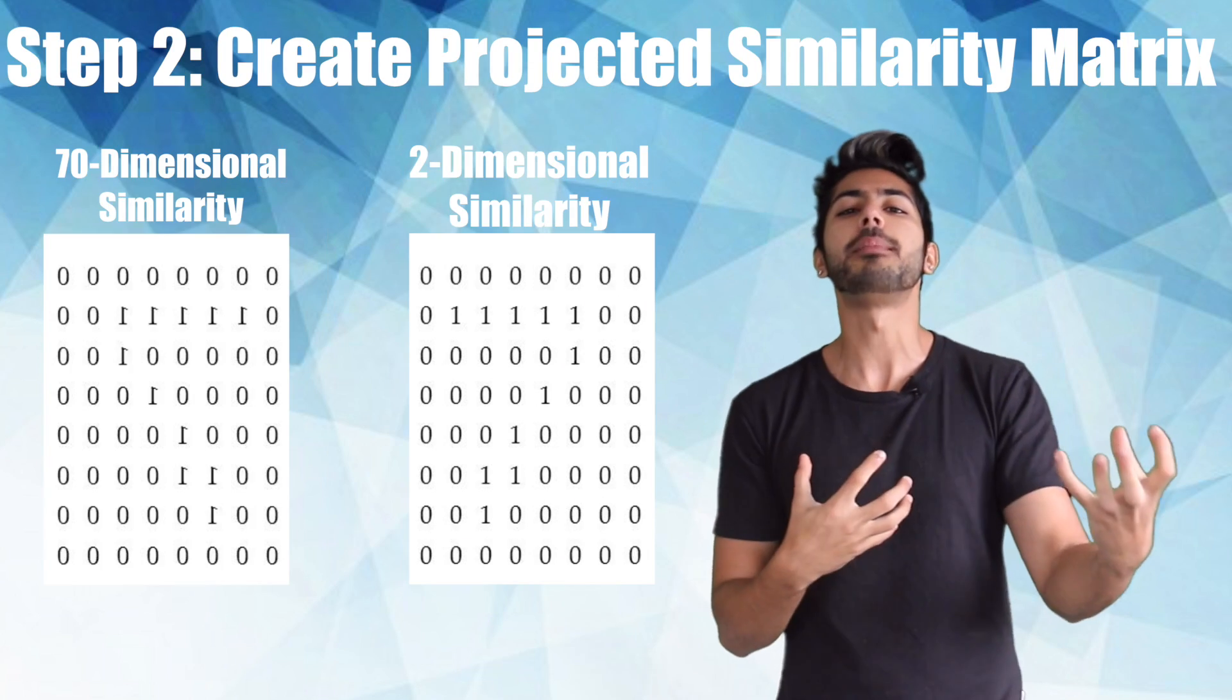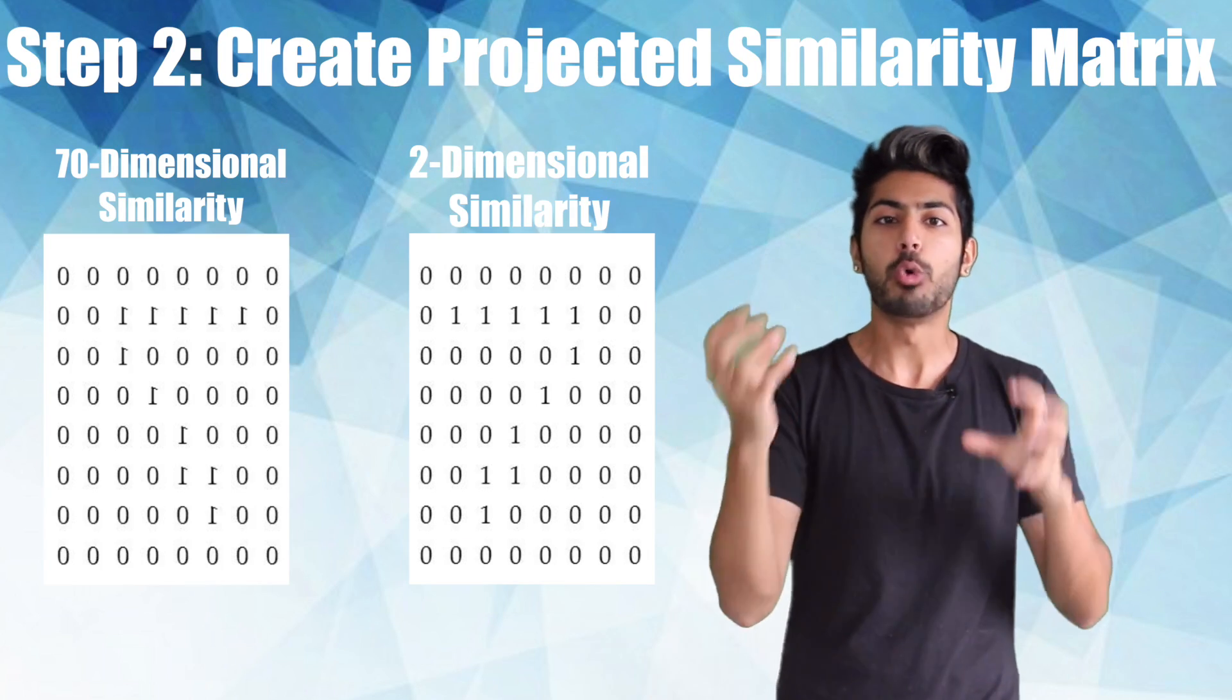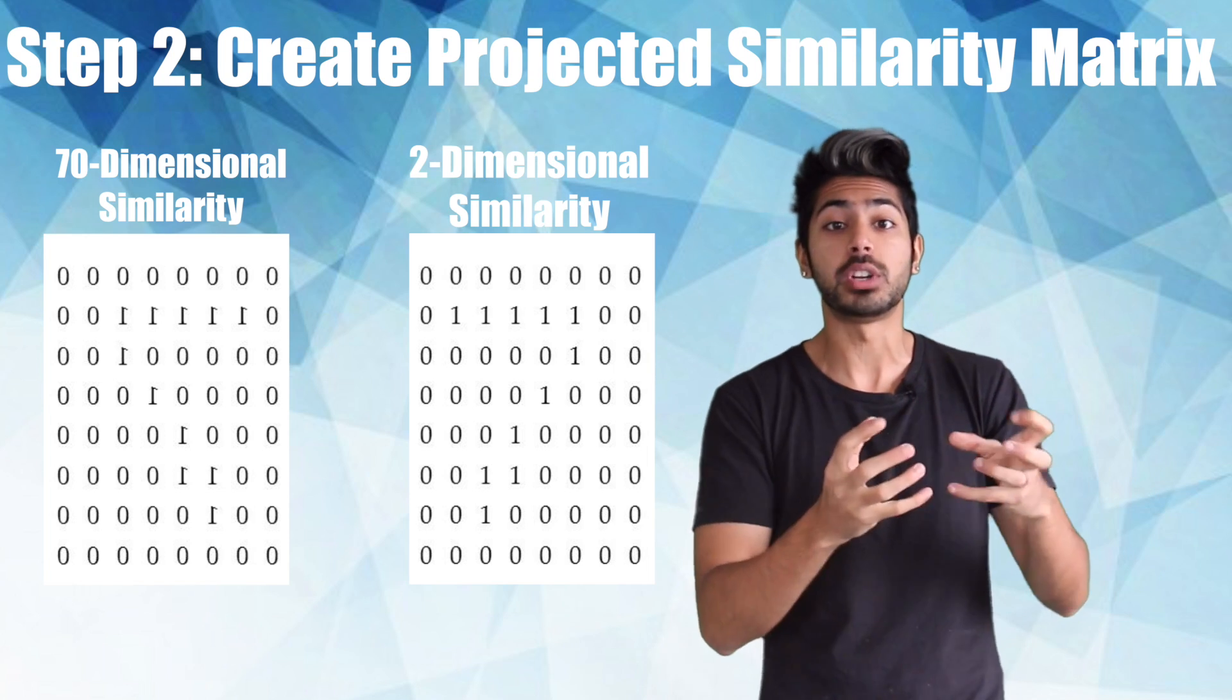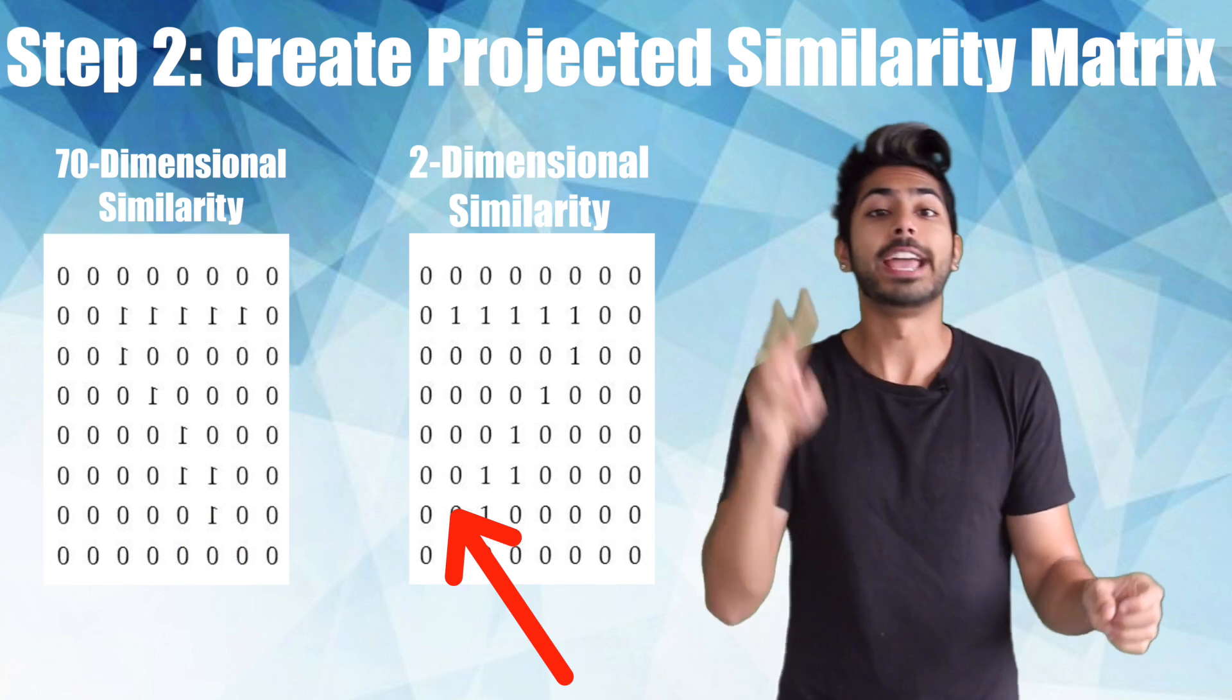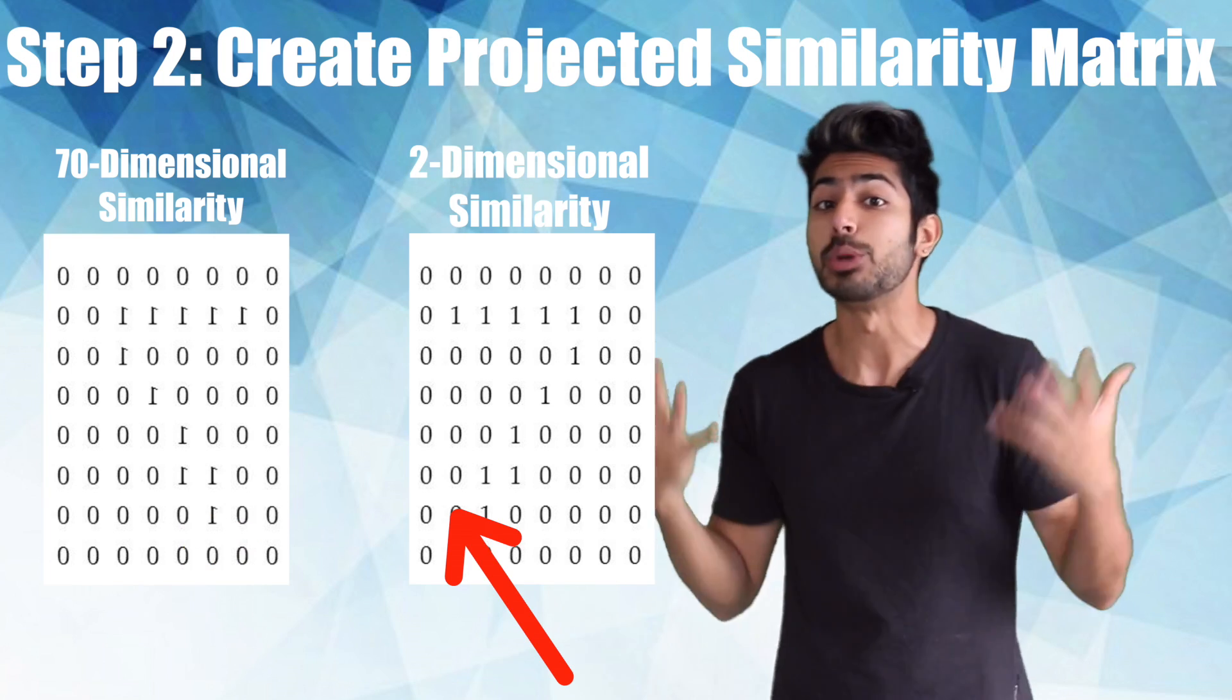It then creates a similarity matrix for the projected map points, which will contain our final representation of the data set. Our first similarity matrix represents where we are and our second represents where we ideally want to be.